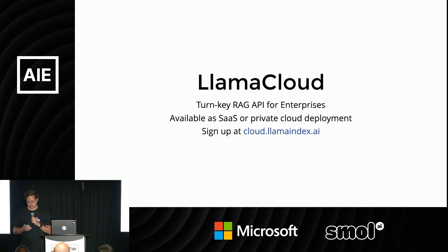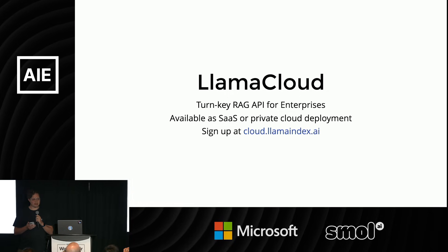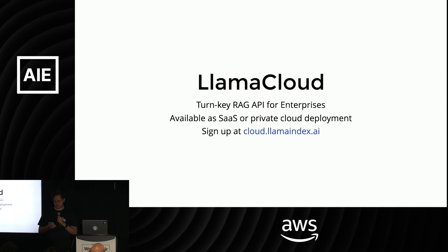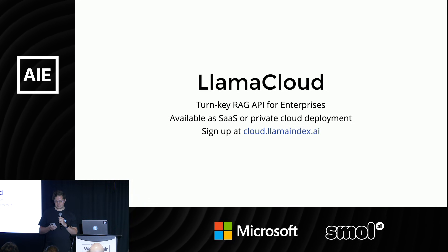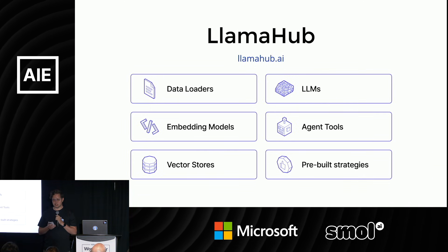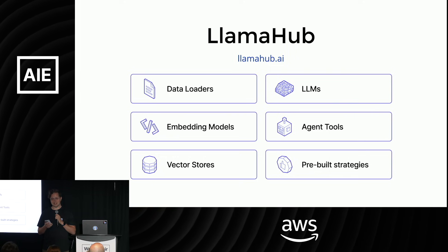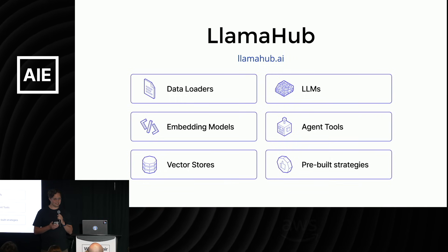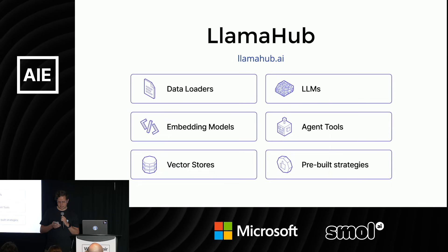We also have an enterprise service called LlamaCloud. If what you want to do is stuff documents into one end and get a retrieval endpoint out of the other, then that is the service for you. Unlike the rest of Llama Index, it costs money. It is available as a SaaS at cloud.llamaindex.ai or you can get it deployed onto your own private cloud. We also have a website called LlamaHub, which is a huge registry of open source software that plugs into the framework and integrates with everything. If you need to get your data out of Notion or Slack or any database in the world, that is where you find the adapters. We also integrate with every LLM that exists — 400 different models over 80 different LLM providers, including local ones like Llama 3.